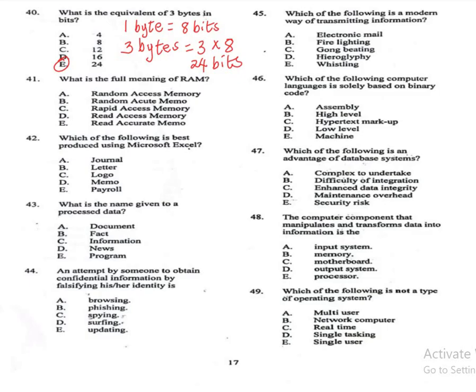Question 41: What is the full meaning of RAM? A: Random Access Memory, B: Random Acute Memo, C: Rapid Access Memory, D: Read Access Memory, E: Read Accurate Memo. The correct answer is A, Random Access Memory. Question 42: Which of the following is best produced using Microsoft Excel? A: journal, B: letter, C: logo, D: memo, E: payroll. The correct answer is E, payroll.